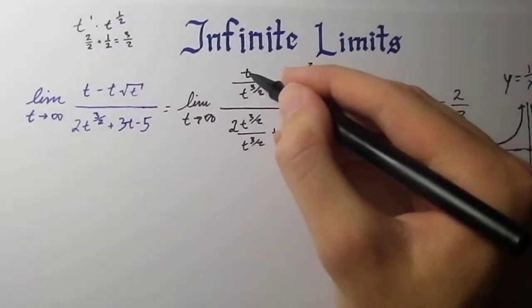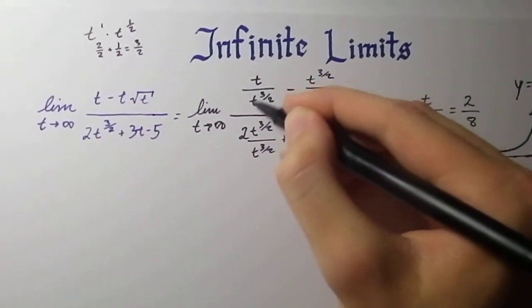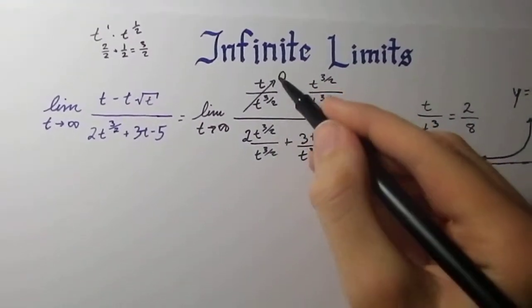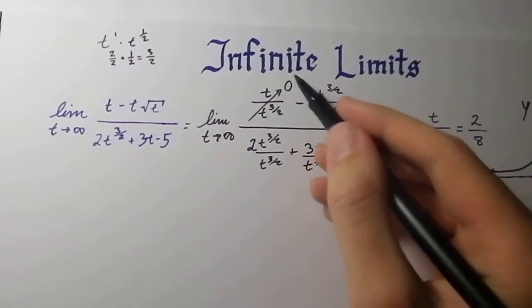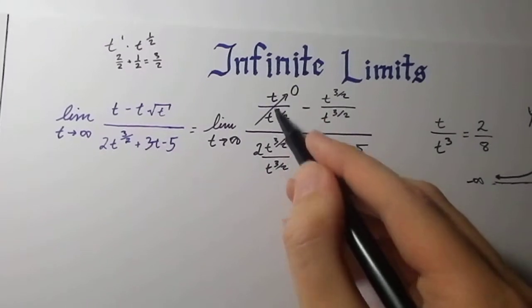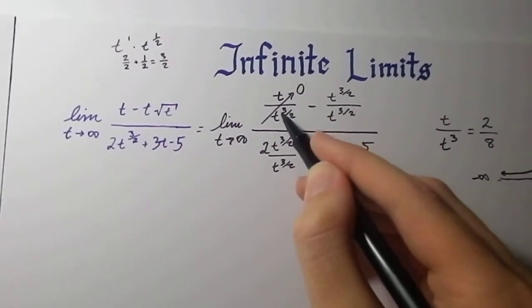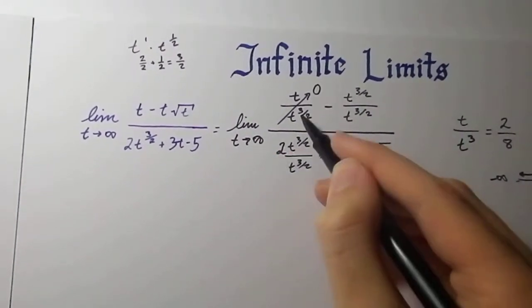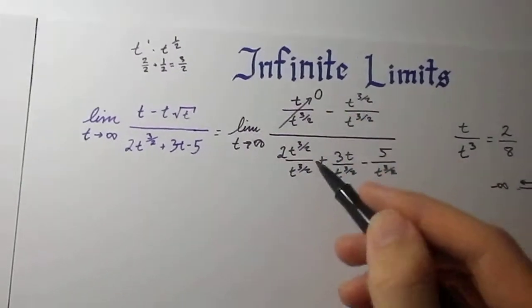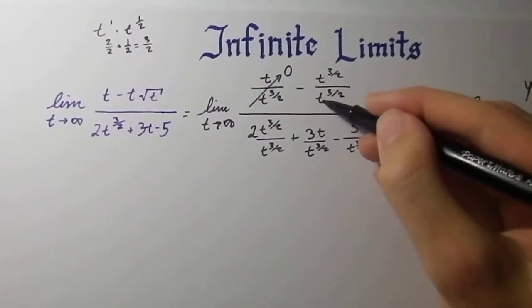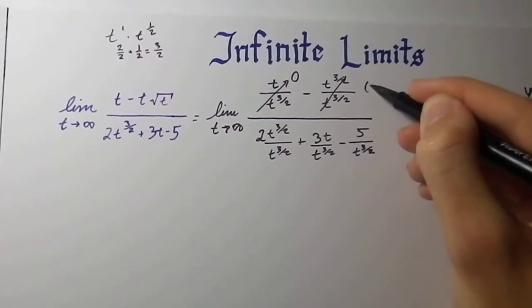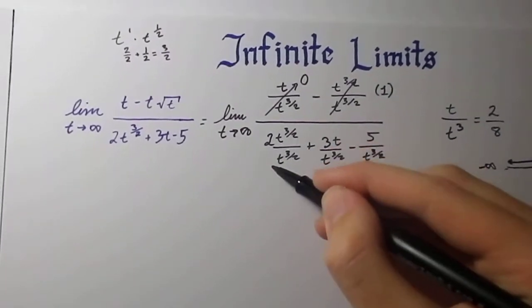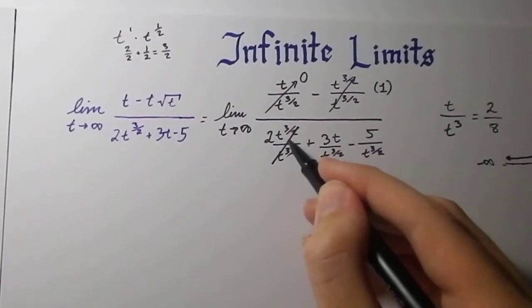So what happens with t over t raised to 3 halves? Well, that's going to go to 0. And I hope that you could understand this because the degree of the denominator is much bigger than the numerator, meaning that this is getting larger as t approaches infinity than here. So it's basically on its way to 0. This is going to actually cancel out and become a 1. Don't forget that 1. And this is going to cancel out, and you're left with 2. 2 times 1 is 2.